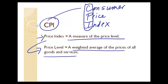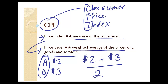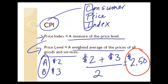To illustrate, suppose we have two goods, good A and good B. The price of good A is $2 and the price of good B is $3. Consumers buy these two goods in equal quantities — if they buy 100 units of A, they buy 100 units of B. Since consumers buy equal amounts, we can just find the average price: $2 plus $3 divided by 2 gives us a price level of $2.50.